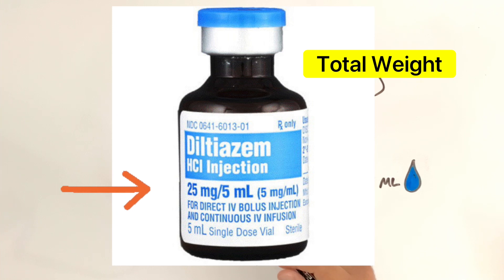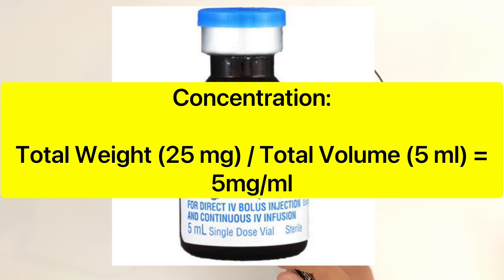How do I get my concentration if it's not written on the bottle, which it is here, but all we have to do is take our total weight, our drug, which is 25. We're going to divide it by 5, which is our total volume. And it's going to give us our concentration, which is 5 milligrams per mL.